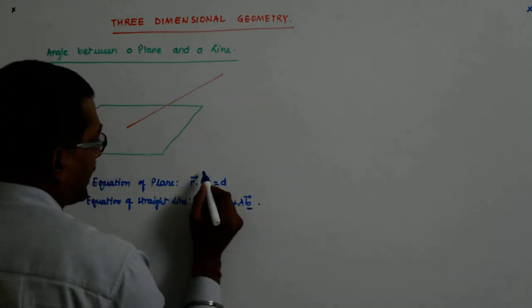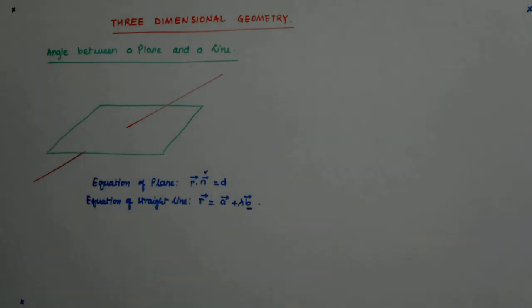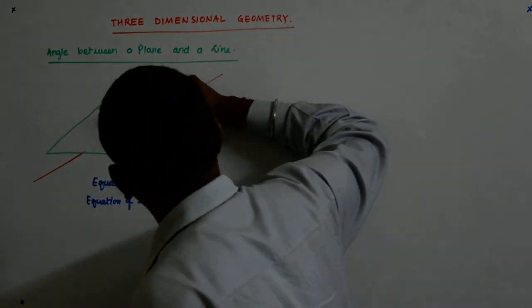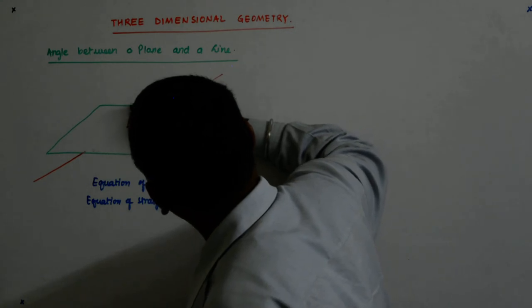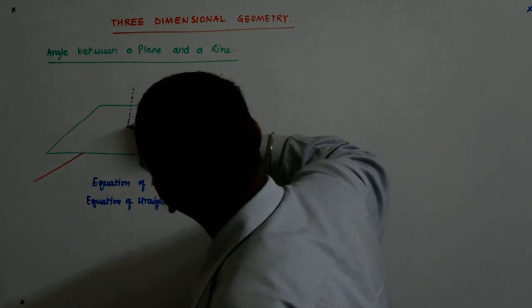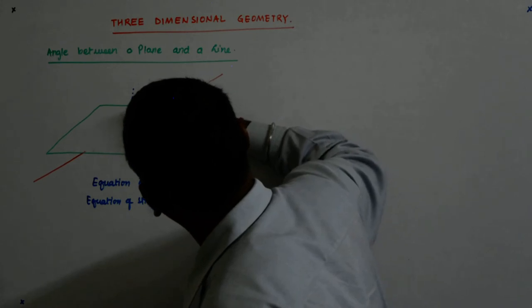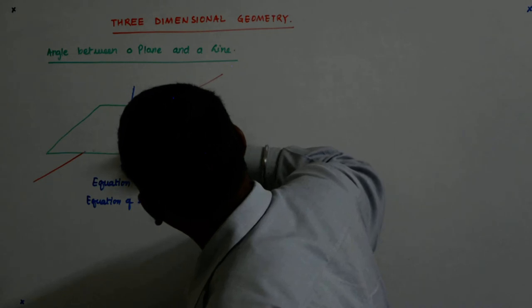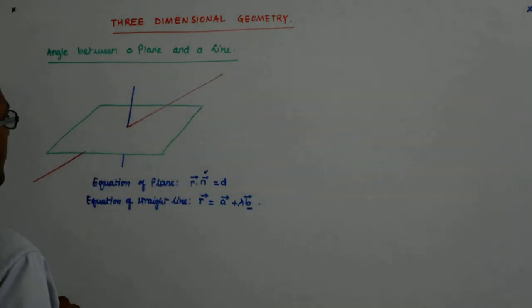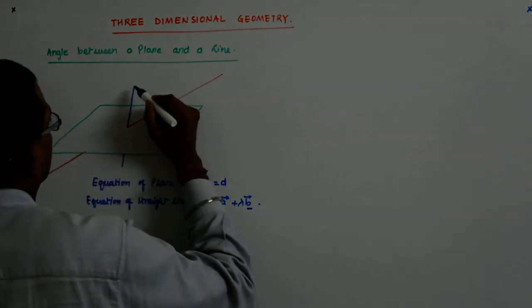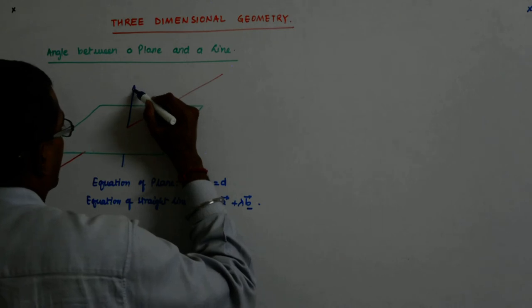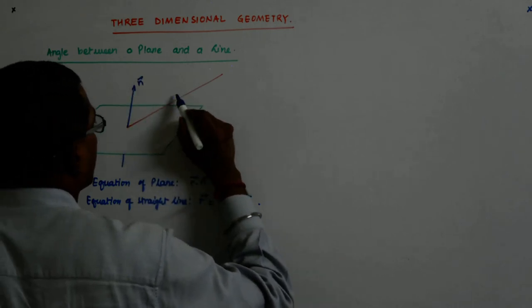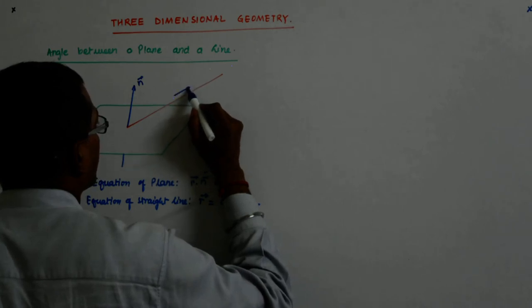Now, this vector is known to me and this vector is known to me. And n vector is what? n vector is nothing but the normal to the plane. So, this is your n vector. This is my n vector and parallel to this, this is my b vector.